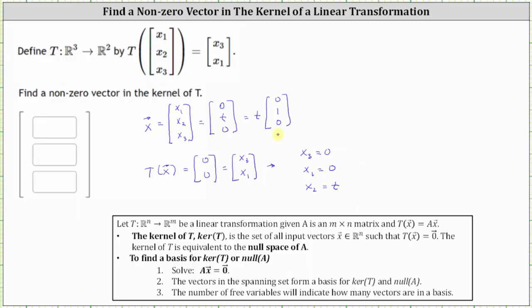We're only asked to find one nonzero vector in the kernel of T. So we can let t be any value. If we let t equal one, for example, we can use the nonzero vector (0, 1, 0).